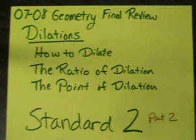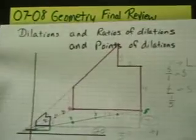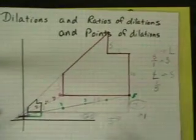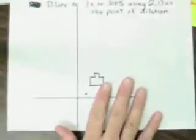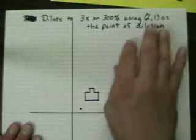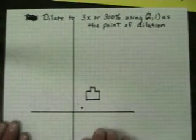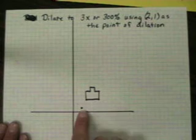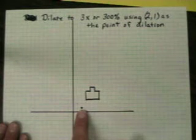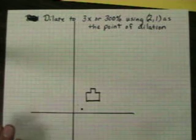Welcome back to the Geometry Final Review. This is part two of Standard 2 and we were working with this. If you want to see the first part, it's there. Now let's talk a little bit about dilating. First I want you to have an idea of how to dilate — what dilating from an outside point does compared to an inside point. I know it's not on the review sheet, but you need to understand this to understand dilation.